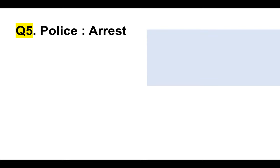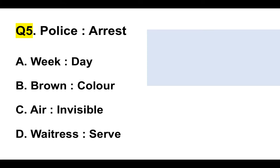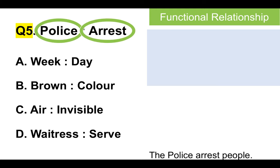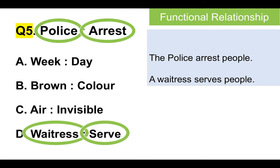Here's another one — question five. Police and arrest. Is it A, weekday; B, brown and color; C, air and invisible; or D, waitress and serve? It's a functional relationship because the police arrest people and a waitress serves people — we're just looking for that functional relationship. So the answer is D.